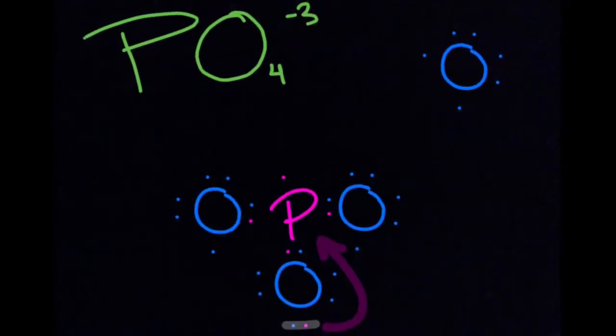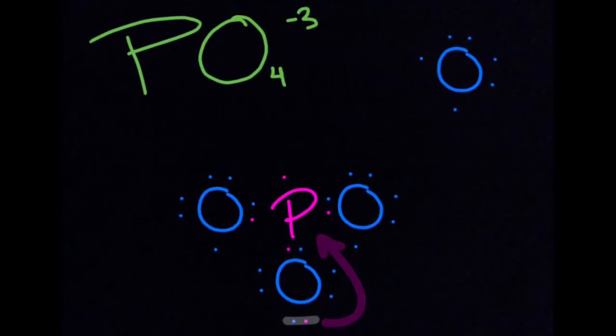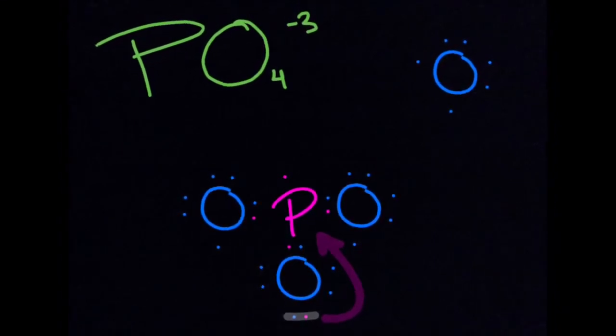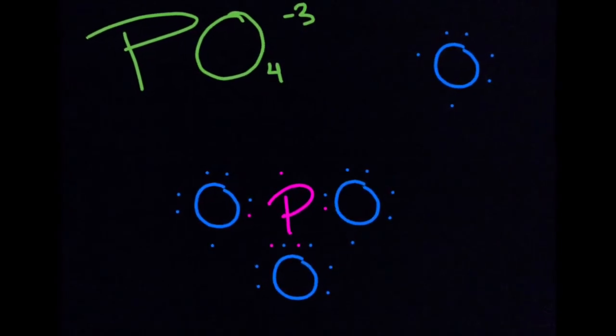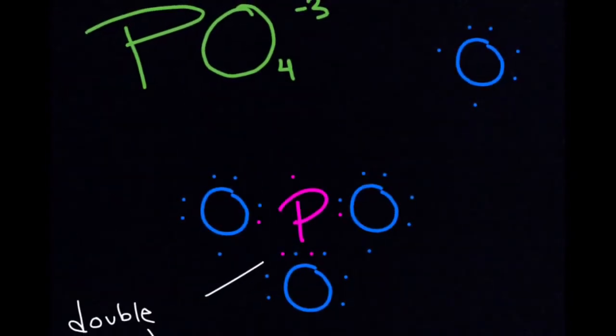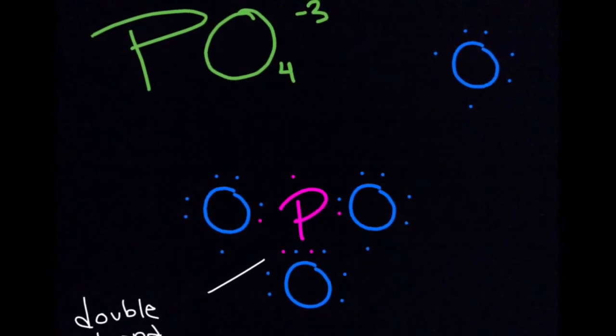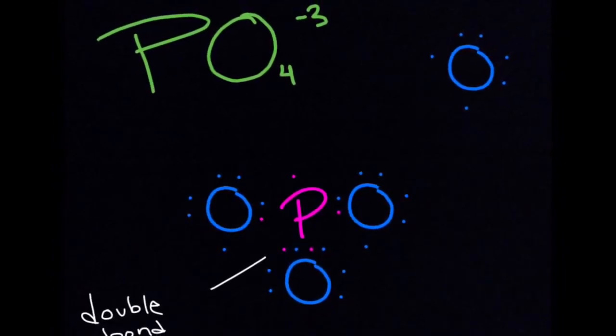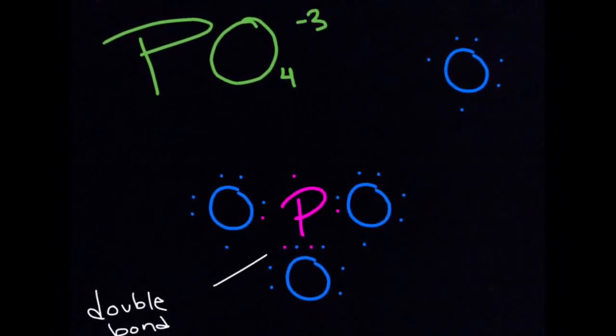However, the phosphorus still has to be linked to itself, so we are going to have to move that bond up on our structure. That's better. That's how it should look when you bring it up. Because one oxygen is linked to one phosphorus by a double bond, you will have to draw that differently, but I will show you that later.